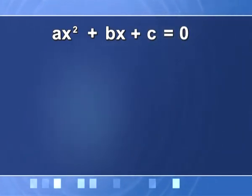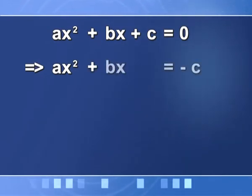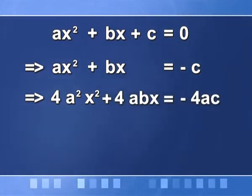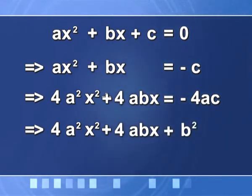We consider the equation again: Ax² + Bx + C = 0. Shifting C to the right hand side: Ax² + Bx = −C. Instead of dividing by A, this time I multiply the whole equation by 4A, getting 4A²x² + 4ABx = −4AC. Then I add B² — the square of the coefficient of x — to both sides, giving 4A²x² + 4ABx + B² = B² − 4AC.